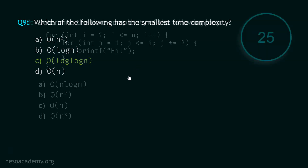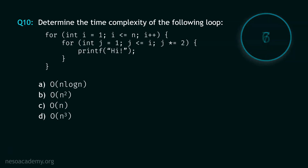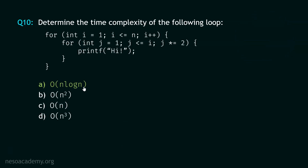Now let's move to question number 10, and your time starts now. Stop. The correct option is option A — Big O of log log N. Finding the time complexity of this nested loop is a bit tricky, but I hope you got the correct option.